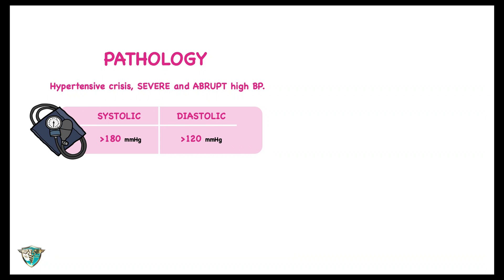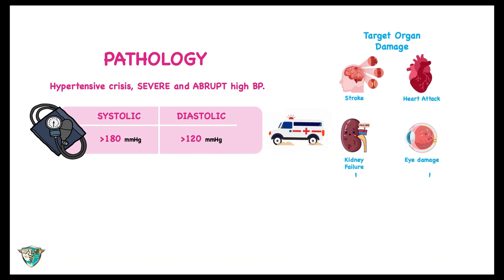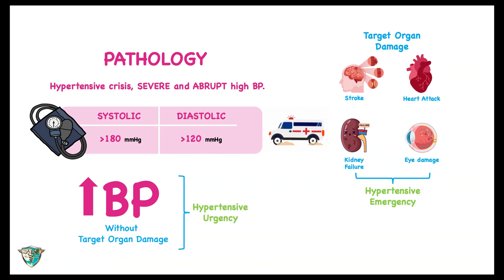Hypertensive crisis is acute and life-threatening. This requires emergency treatment due to target organ damage, which is called hypertensive emergency. If the patient's blood pressure is severely elevated but there is no clinical evidence of target organ damage, this is categorized as hypertensive urgency.